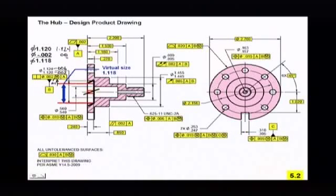So if I take my 1.124 hole, and I allow it to tilt six, what do I have left? I have... Back down to 1.118.